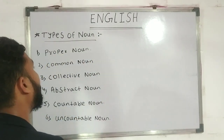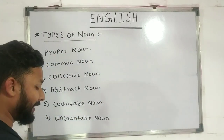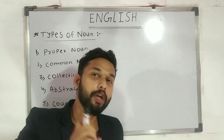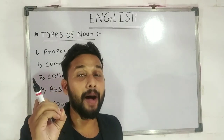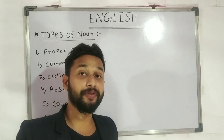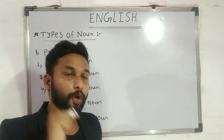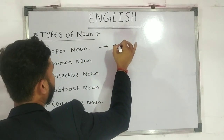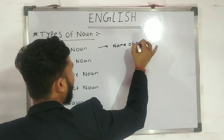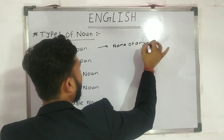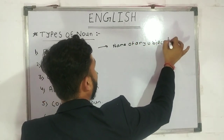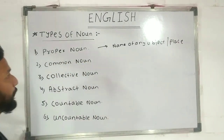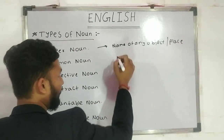First of all, I will tell you about proper nouns. What is the meaning of proper nouns? The definition is: if we talk about proper nouns, then if some person's name, or place's name, or object's name is written directly, then we call it a proper noun. If we write the specific name of any person, object, or place, then we call it a proper noun.